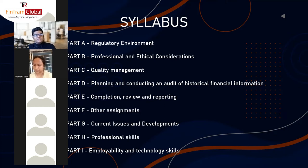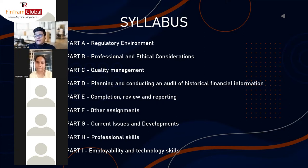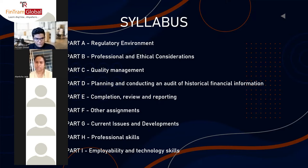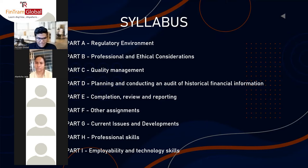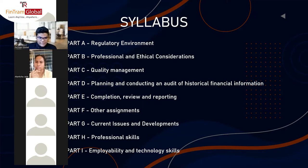Part H is professional skills — a newly added area. Previously in a 100-mark exam, we had around 96 technical marks and 4 professional marks. In the 50-mark question we used to have 46 technical marks and 4 professional marks. But now the structure has changed: we have 80 marks as technical marks and 20 marks as professional marks in total.